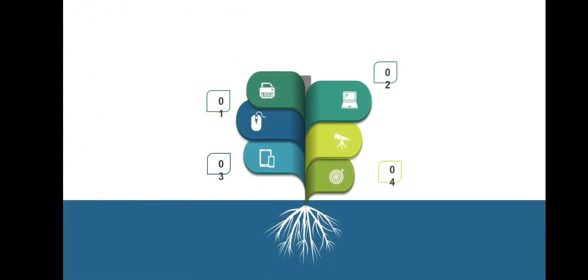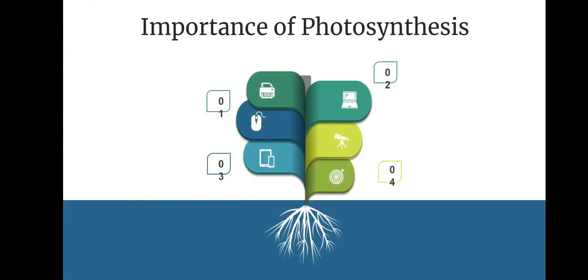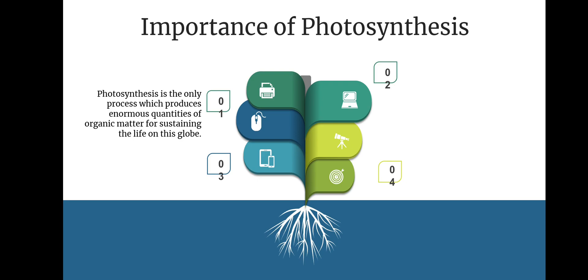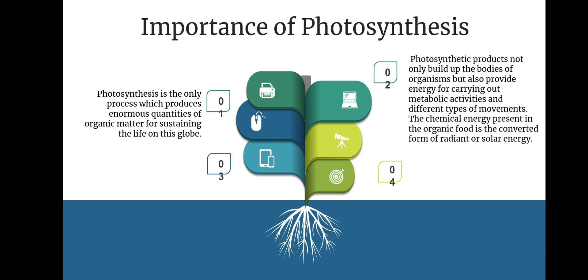Next we see the importance of photosynthesis. First point: photosynthesis is the only process which produces enormous quantities of organic matter for sustaining life on this globe. Second point: photosynthetic products not only build up the bodies of organisms but also provide energy for carrying out metabolic activities and different types of movements. The chemical energy present in organic food is converted from radiant or solar energy.